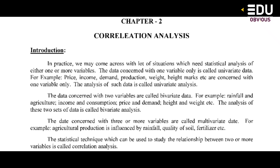The next point is what is bivariate data. The data concerned with two variables is called bivariate data. For example, rainfall and agriculture — these two variables form bivariate data. Bivariate data is data that is concerned with two variables.